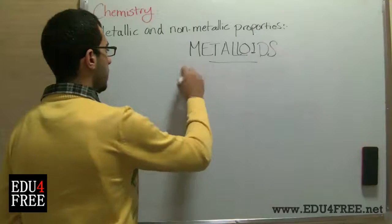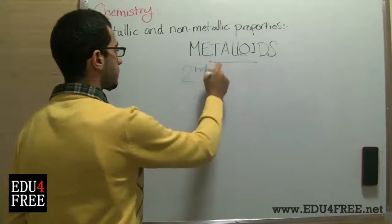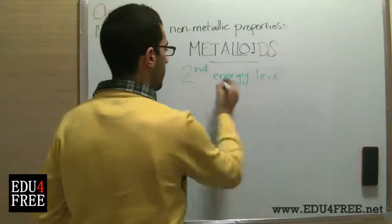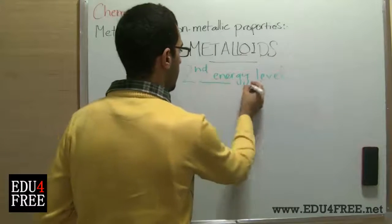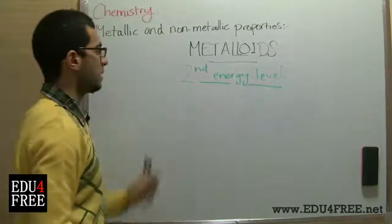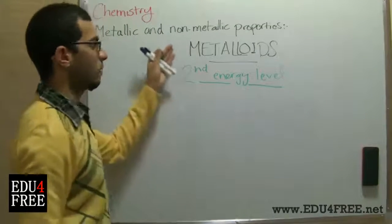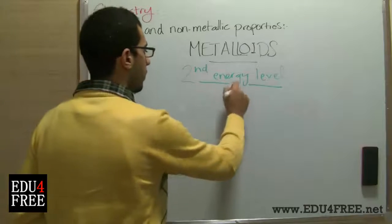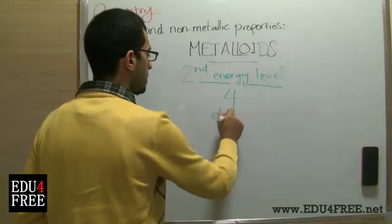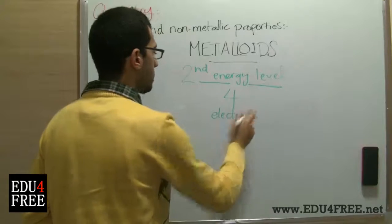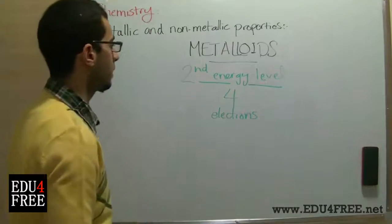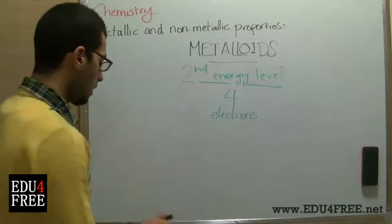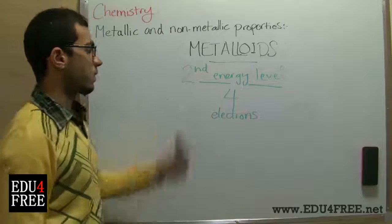So if the second energy level is the outermost energy level in an atom, and this atom is supposed to be an atom of a metalloid, it should carry four electrons, because this is half of the capacity of the second energy level whose maximum is eight.